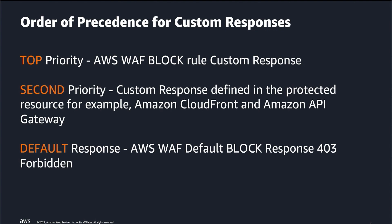Something to note is that your AWS WAF must be configured to allow your web request through in order for your protected resource custom response to respond back to your client. You can then define custom responses in your protected resources — for example, with Amazon CloudFront you can customize the error page based on the status code, and with Amazon API Gateway you can define the response and status code for your gateway. If none of these custom responses is specified and the web request is blocked by AWS WAF, it will return a default block response of 403 Forbidden back to the client.